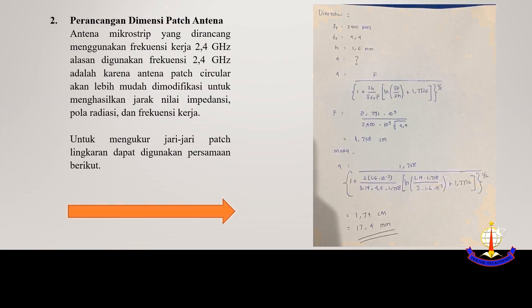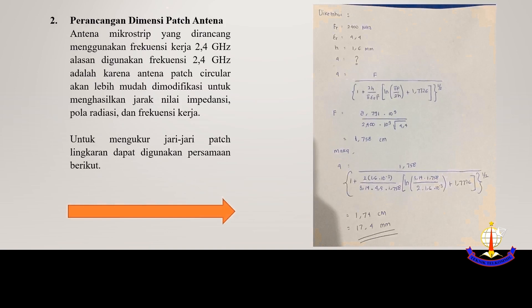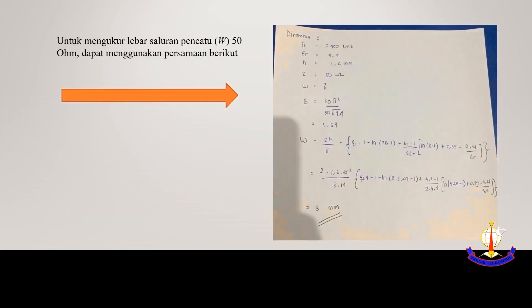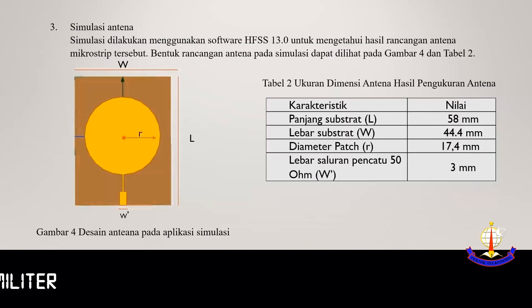Dengan menggunakan persamaan tersebut, maka kita akan mendapatkan jari-jari patch sebesar 17,4 mm. Untuk mengukur lebar saluran pencatu yang diberi impedansi 50 ohm, saya menggunakan persamaan ini. Dari persamaan ini saya mendapatkan lebar saluran pencatu sebesar 3 mm. (Using this formula, the patch radius is 17.4 mm. For the 50-ohm feed line width, using the corresponding formula, the feed line width is 3 mm.)